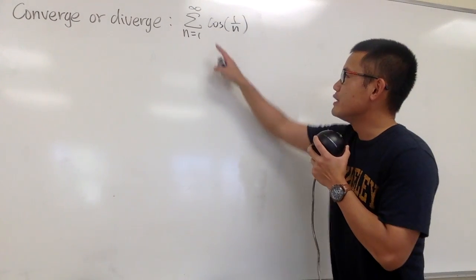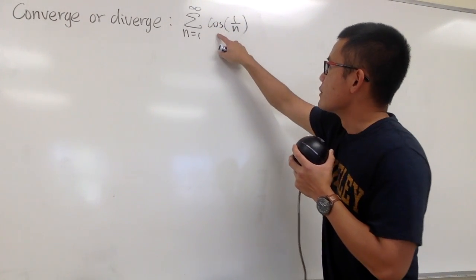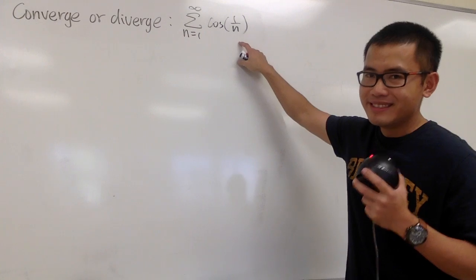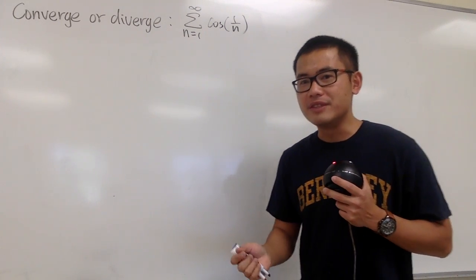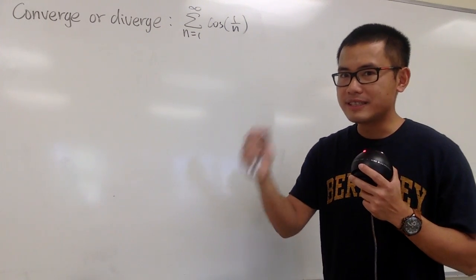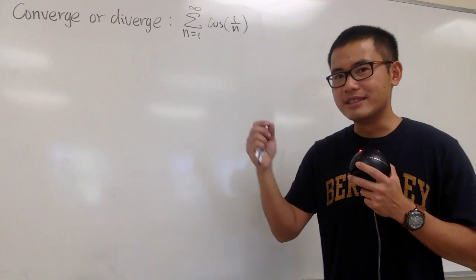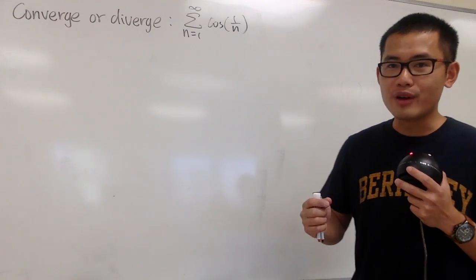Converge or diverge? Here we have the series when n goes from 1 to infinity, cosine of 1 over n. Maybe you have seen the previous video about the series of sine of 1 over n, likewise the series of sine of 1 over n squared.